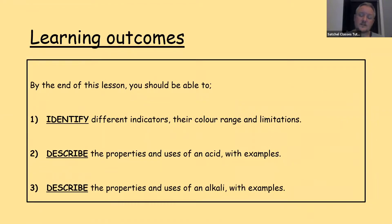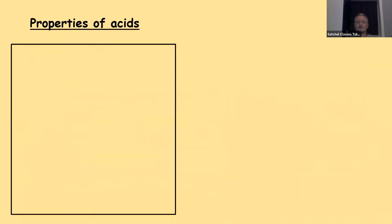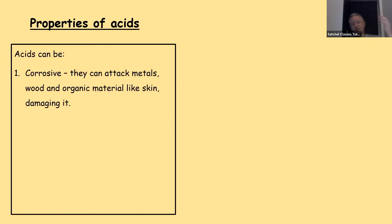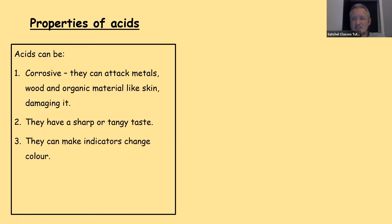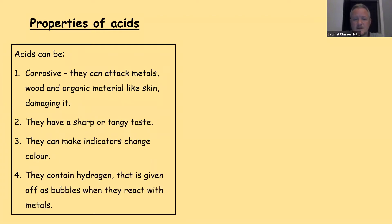So that covers identifying different indicators, their colour range, limitations, and why we would use them. Properties of acids: acids can be corrosive — they attack metals, wood, and organic material like skin, damaging it in some cases quite severely. They have a sharper, tangy taste. They can make indicators change colour. And they contain hydrogen that's given off as bubbles when they react with metals. Other things can contain hydrogen but don't give it off when reacting with metals, so that's the key distinction.